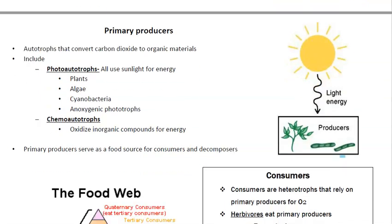Primary producers are autotrophs that convert carbon dioxide to organic materials, and they include two types. Photoautotrophs get their energy from sunlight; organisms in this group include plants, algae, cyanobacteria, and anoxygenic phototrophs. Chemoautotrophs, on the other hand, oxidize inorganic compounds to make their own energy — examples are bacteria that live in the deep ocean where no light penetrates.